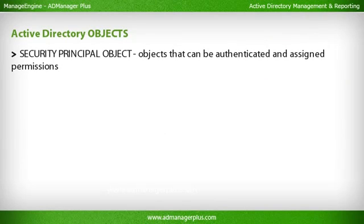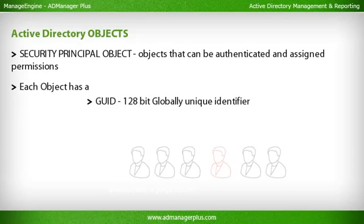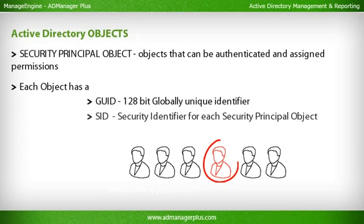Security Principal Objects are objects that can be authenticated and assigned permissions. Each object has a GUID — a 128-bit Globally Unique Identifier — and a SID, or Security Identifier, for each Security Principal Object.